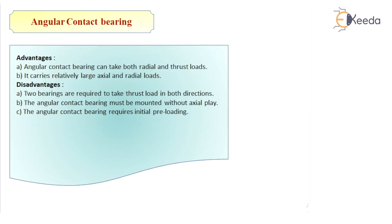The next category is angular contact bearing. In angular contact bearing, the grooves in the inner and outer races are so shaped that the line of reaction at the contact between balls and the races makes an angle with the axis of the bearing. Angular contact bearing has the following advantages: it can take both radial and axial load, and carries relatively large axial and radial loads.